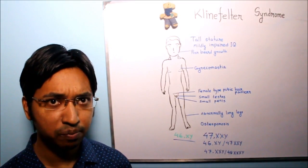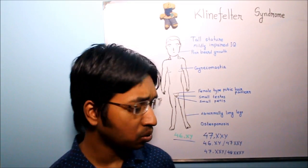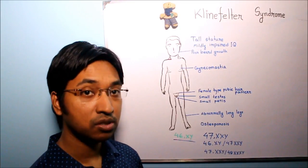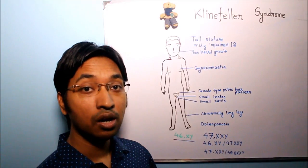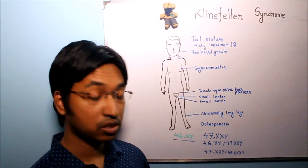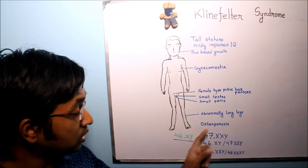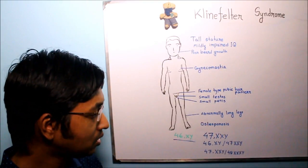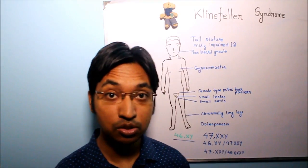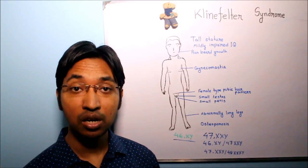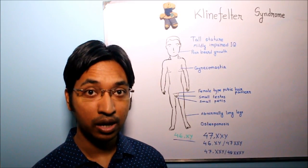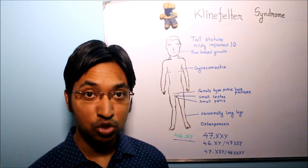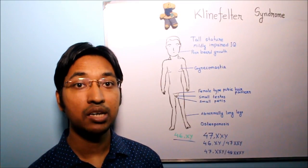One thing to remember: you may be asking, in this karyotype we can see 2X chromosomes — sometimes there may be 3 or 4X chromosomes — so why is this individual still showing male phenotype? The answer is due to the presence of Y chromosome. Always remember, no matter how many X chromosomes an individual has, if there is also presence of Y chromosome, the individual will be phenotypically male.